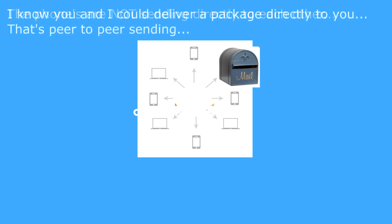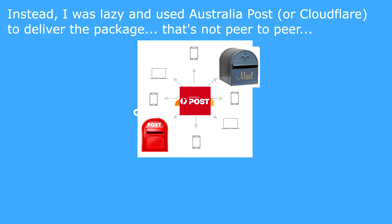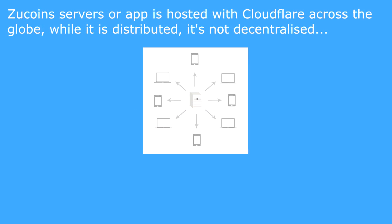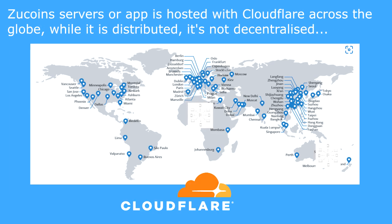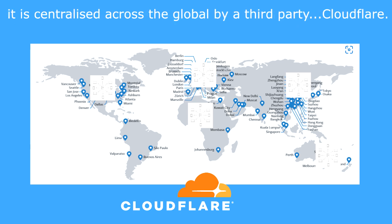Think of it this way: I know you and I could deliver a package directly to you — that's peer-to-peer sending. Instead, I was lazy and used Australia Post, or Cloudflare, to deliver the package — that's not peer-to-peer. ZooCoin's servers or app is hosted with Cloudflare across the globe. While it is distributed, it's not decentralized. It is centralized globally by a third party: Cloudflare.